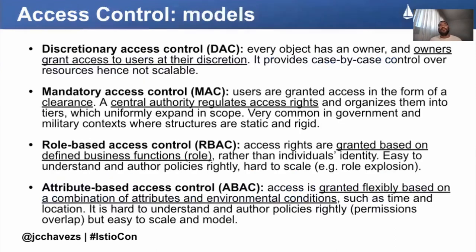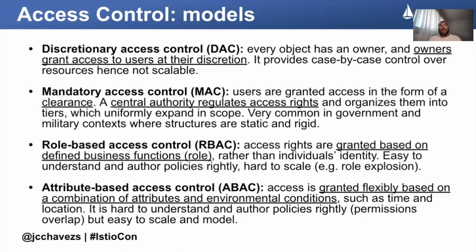What are the models we have for access control? The most common ones are four, but the most used nowadays are a couple. First, we have Discretionary Access Control (DAC), where every owner has an object and grants access to other users at their discretion — case by case. Since it's ad hoc, it doesn't seem to be too scalable because you have lots of owners versus lots of resources versus lots of potential access holders.